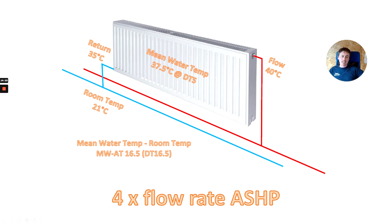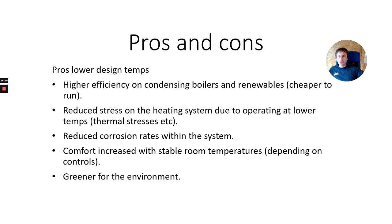For an ASHP at DT5, going in at 48.5°C and returning at 43.5°C, pipe work needs to be updated and radiators will need to be updated for output — though the radiator itself doesn't know it has four times the flow rate, it's the same mean water to air temperature. Going down to the best we can get for an ASHP — a flow of 40°C, return of 35°C, DT5 — we're on a design temperature of 16.5, and we'd hope for a really good COP with that system.